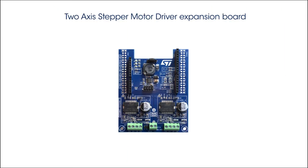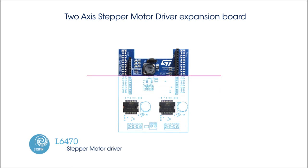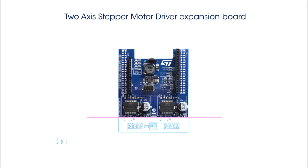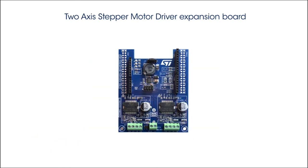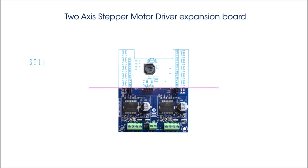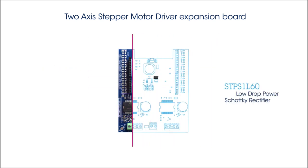The STM32 Nucleo 2-axis stepper motor expansion board includes a fully integrated micro-stepping motor driver with motion engine and SPI, a step-down switching regulator which goes up to 3 amps, and a low drop power Schottky rectifier.